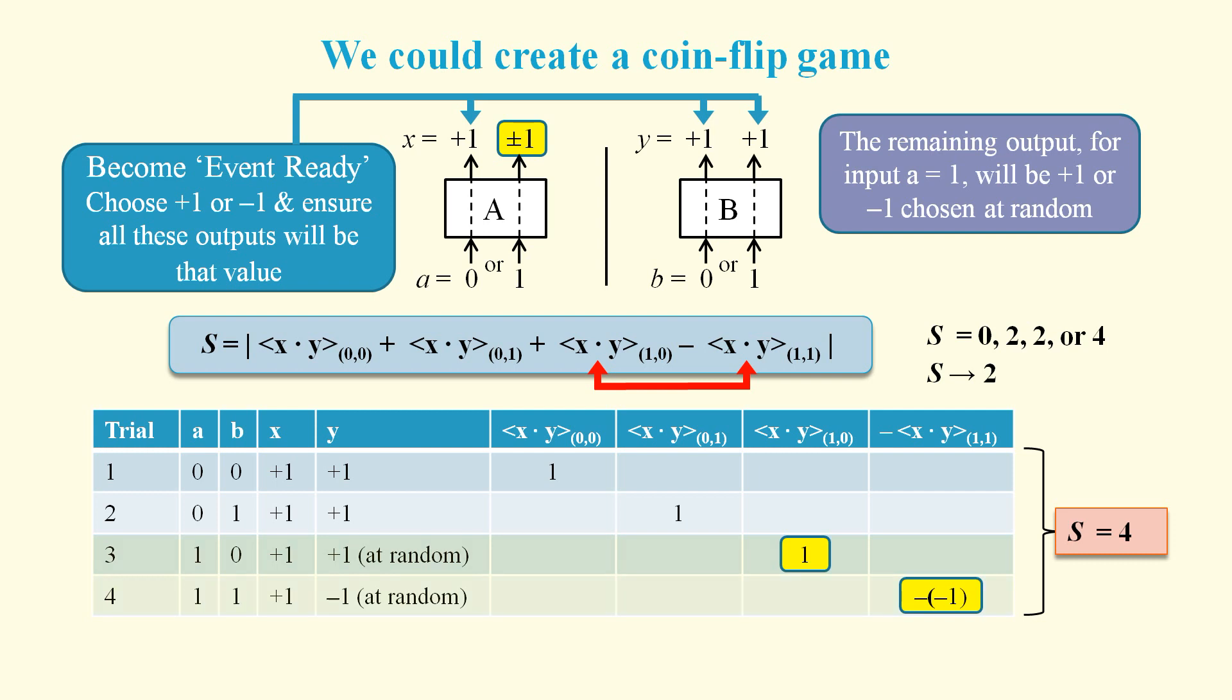Since about half the trials will produce a random output, we have effectively created a coin flip game where at the end of the game S is just as likely to be over 2 as it is to be under 2.